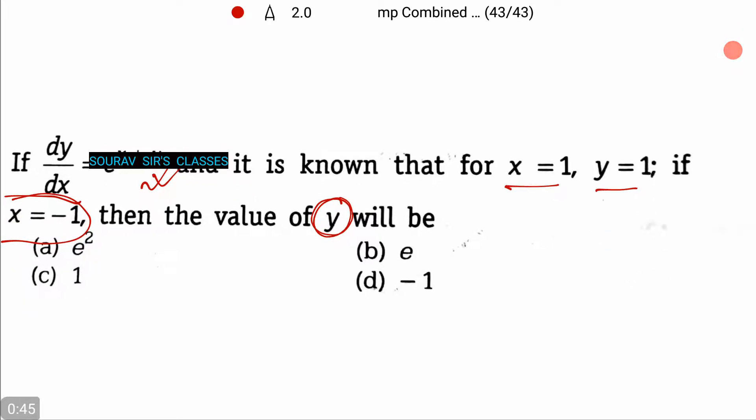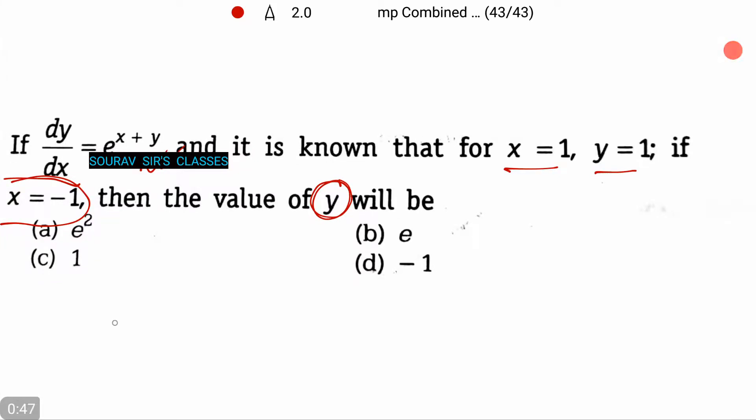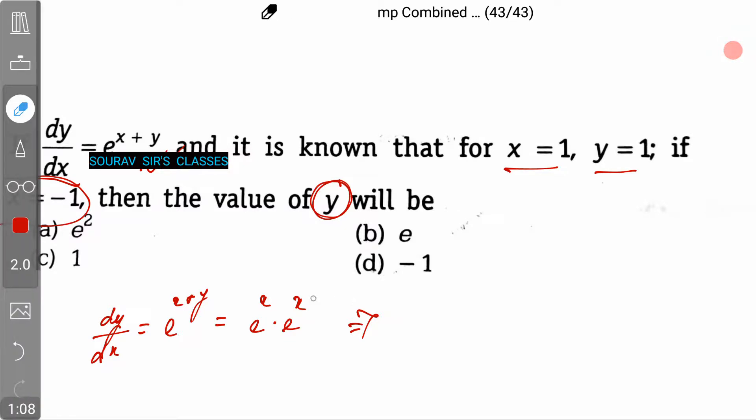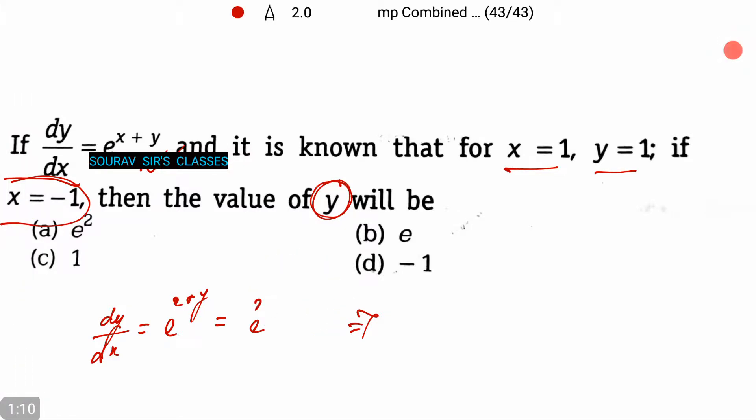Okay, so let's just write down the problem. dy by dx is equal to e to the power x plus y, which is equal to e to the power x times e to the power y. Now, this can be written as... oops, I put both of them as x. Just let me write that down.